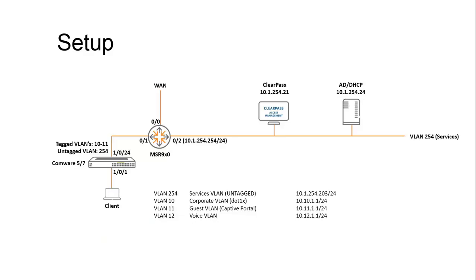The diagram shows you the setup where I have a client connecting to an access port, an uplink that is configured as a trunk port permitting the appropriate VLANs, and a services VLAN that provides the DHCP, DNS, Active Directory, and ClearPass services.